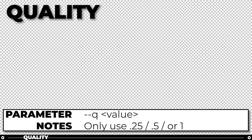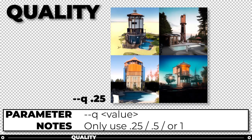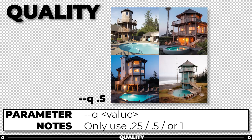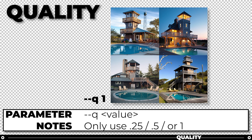The quality parameter determines which quality you want your render to be. It does not affect the resolution, but it determines how much time is spent rendering your image. Lower values are good for low detail images; if you are creating architectural images, a higher quality would likely be better. You can use 0.25, 0.5, or 1, and the default is set to 1.